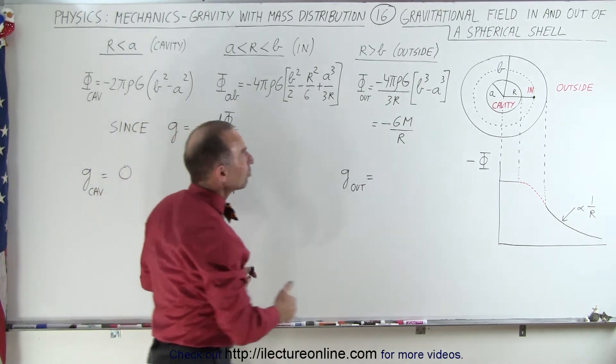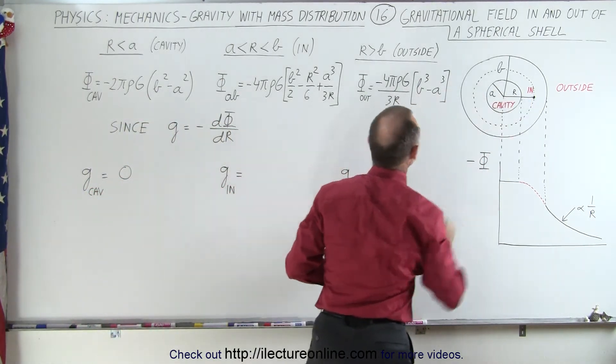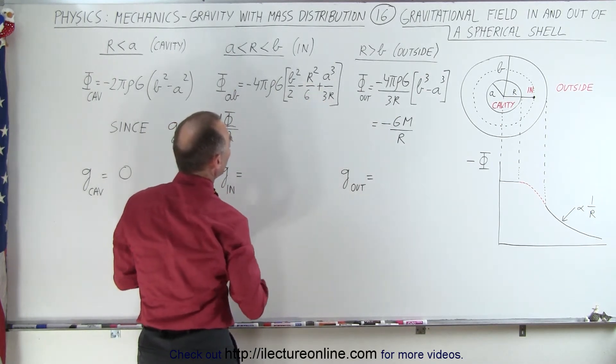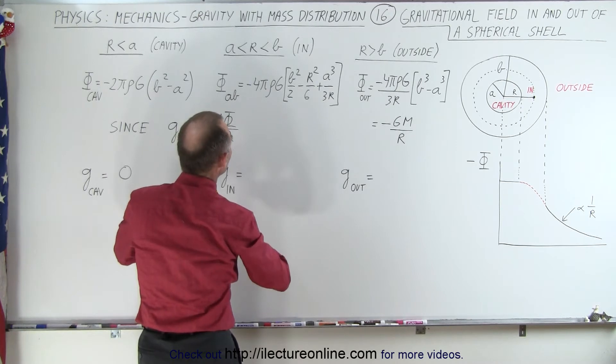On the inside region between the cavity and the outside of the sphere, we see that there is a dependency with the variable r. So when we take the derivative of that, we should get the following.